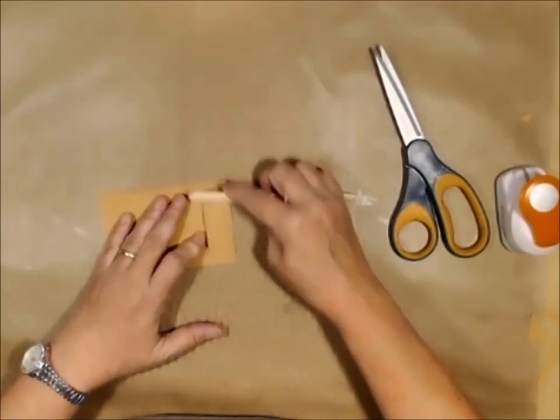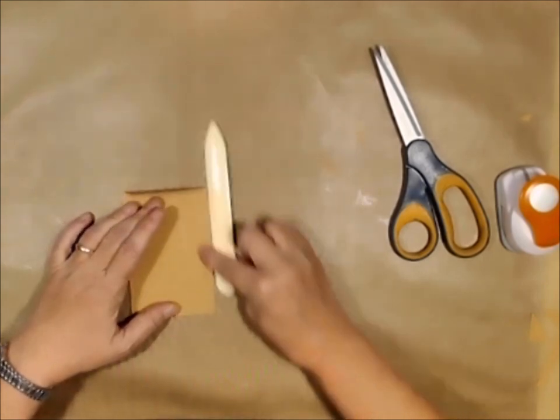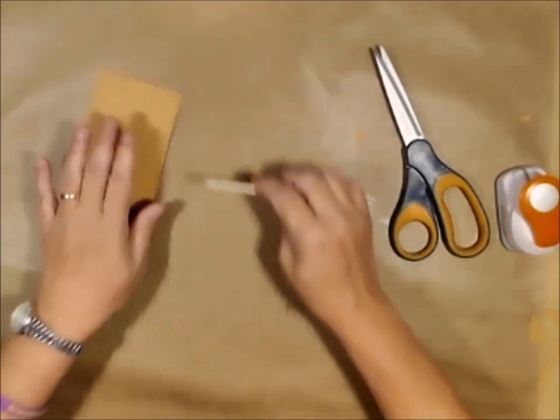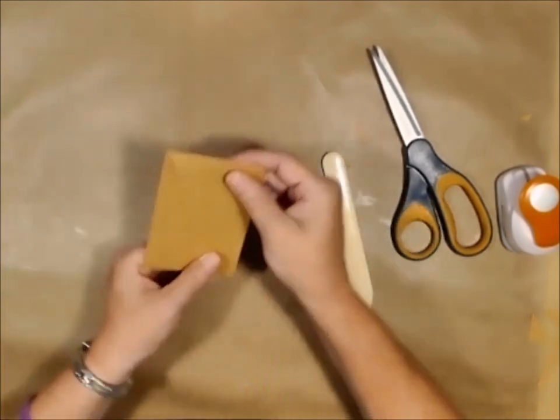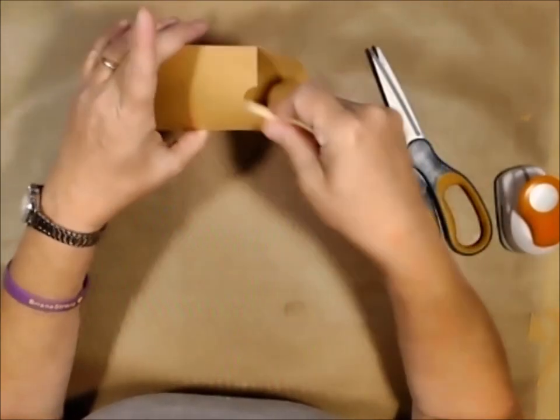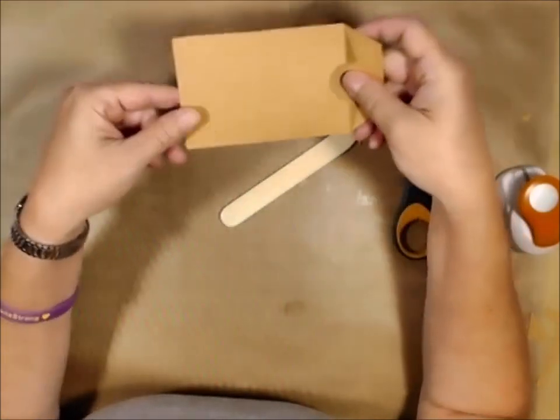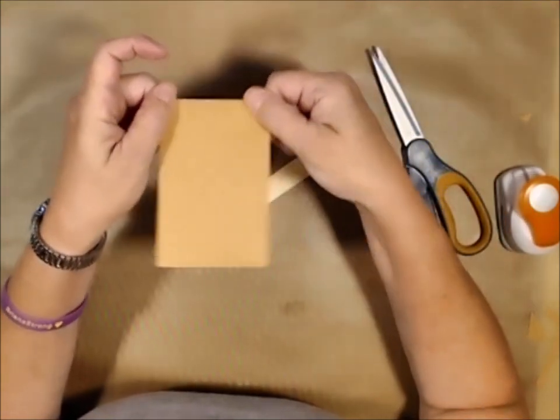Let's give that a good fold. Give this a real good press. Give that a press. Give that a press. And there you have it. Look. Easy peasy coin folder to use in your journals.